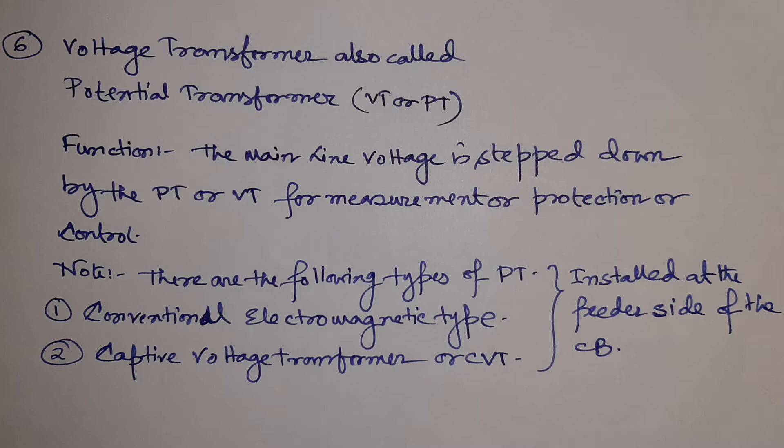The voltage transformer is used for measurement or protection purposes. There are two types: number one is the conventional electromagnetic type, and number two is the capacitive voltage transformer or CVT. The voltage transformer is installed on the feeder side of the circuit breaker — generally for incoming line, bus coupler, and bus bar — so we can check whether the power has come through or whether the line is alive.